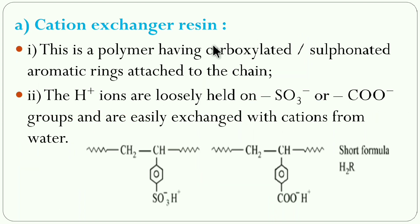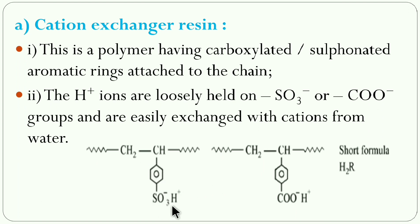The cation exchanger resin is a polymer group with carboxylate or sulfonated aromatic rings. H⁺ ions are loosely bound to the SO₃⁻ group or COO⁻ group. The polymeric chain has aromatic rings with SO₃H or COOH groups where H is loosely bound. For representation, the short formula H₂R is used — a resin containing loosely bound hydrogen ions.